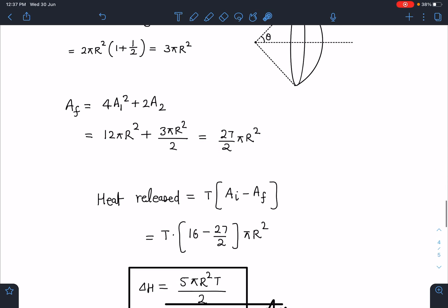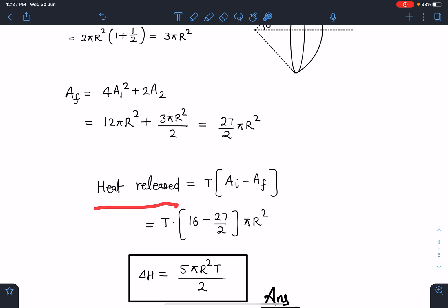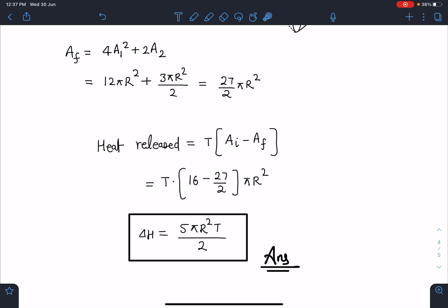When I simplify this value will come as 27πR²/2. So now it's very easy to calculate: heat released will become T times πR²(16 - 27/2). When I simplify this I am going to get heat released as 5πR²T/2. This is going to be the answer.